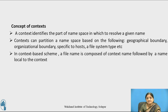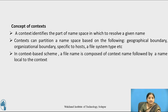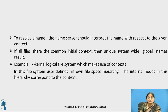In a context-based scheme, a file name is composed of a context name followed by the file name that is local to that context — unlike the first approach where the host name was concatenated with the file name. To resolve a name, the name server should interpret the name with respect to the given context. If all files share the same initial context, then unique system-wide global names result.